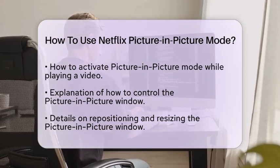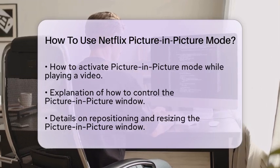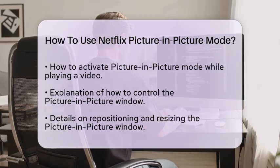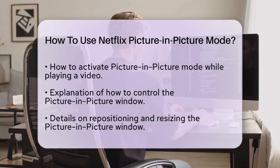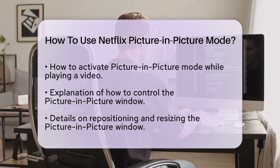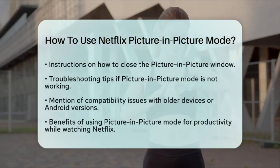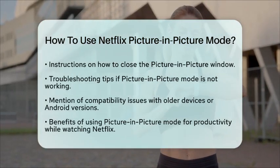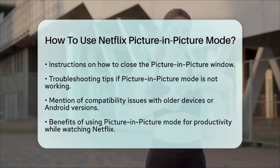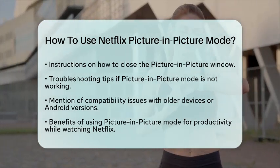To close the Picture-in-Picture window, tap the X button or drag the window to the X at the bottom of the screen. If you find that Picture-in-Picture Mode is not working, double check that all permissions are enabled and that both your device and the Netflix app are updated. Keep in mind that some older devices or Android versions may not support this feature.